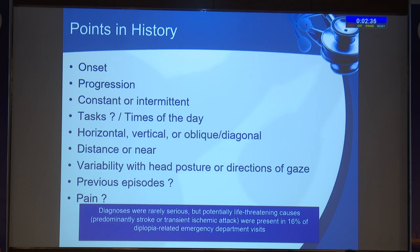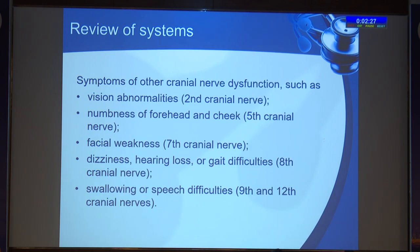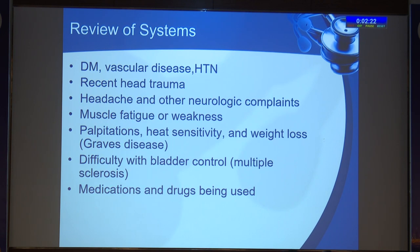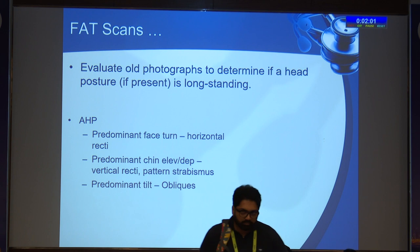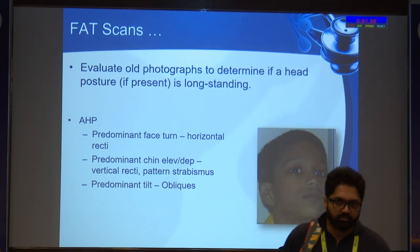Review of other neurological systems with a thorough history — including diabetes, hypertension, recent trauma, Graves' disease, multiple sclerosis, and any other drugs — is important. Look at old photographs to see if the head posture is long-standing or of recent onset. If there is a face turn, it could be because of horizontal recti; if there is a chin elevation or depression, it's vertical recti; and if there is a tilt, it could be because of the oblique muscles. For evaluation: ductions, versions, sensory testing prior to motor testing, saccadic velocity, diplopia and Hess charting, neuroimaging including MRA or CTA angiography. Red flags include an evolving presentation, younger patient, multiple cranial nerve involvement, pupil involvement, and dyskinesia — these definitely warrant neuroimaging. Single-fiber EMG is more reliable for myasthenia. Orbital imaging or thyroid function tests should also be done.